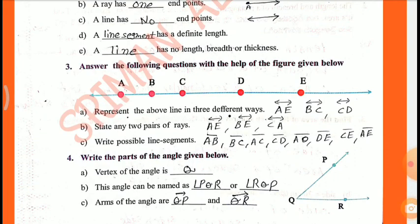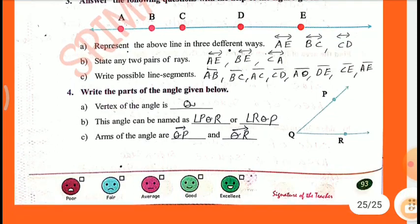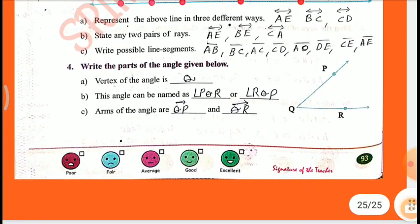Third: with the help of the figures given, represent the line in three different ways — AE bar, line AE, line BC, line CD. State any two pairs of rays: line AE, line BE, line CA. Write possible line segments: AB, BC, AC, CD, AD, DE, CE, AE. Fourth: the vertex of the angle is Q. This angle can be named as angle PQR or angle RQP. The arms of the angle are QP and QR.